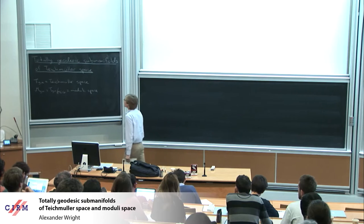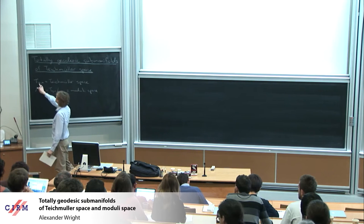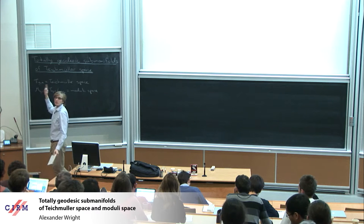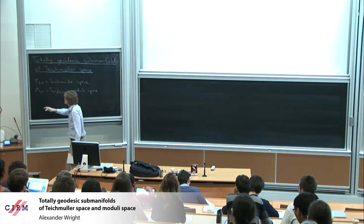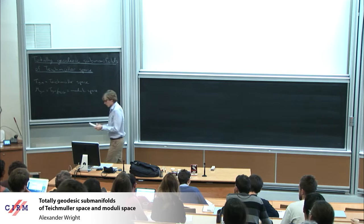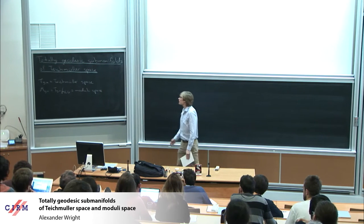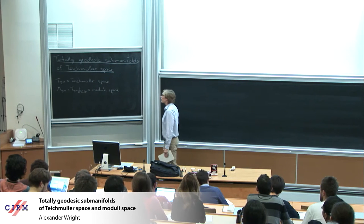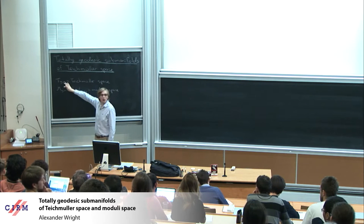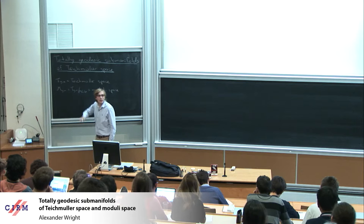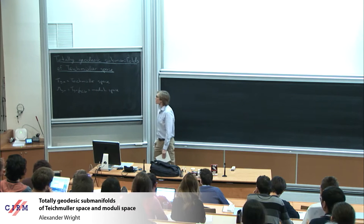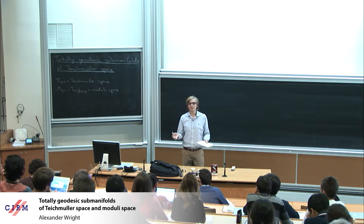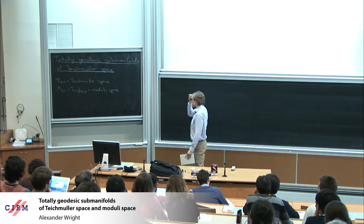I'll think about the Teichmüller space of genus G Riemann surfaces with N marked points — it doesn't matter if they're labeled or unlabeled. The moduli space is the quotient by the mapping class group. Teichmüller space is a beautiful complex manifold; it's biholomorphic to a bounded domain in C to the 3G minus 3 plus N.